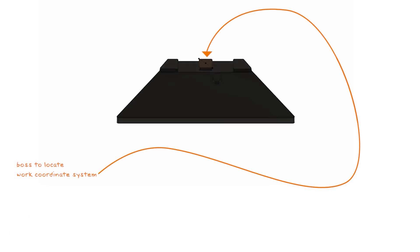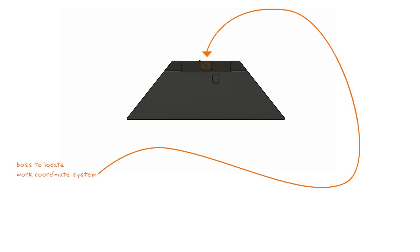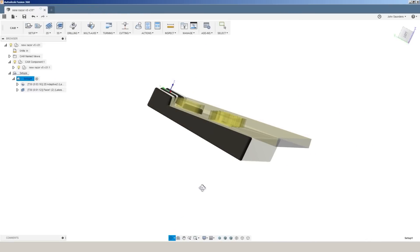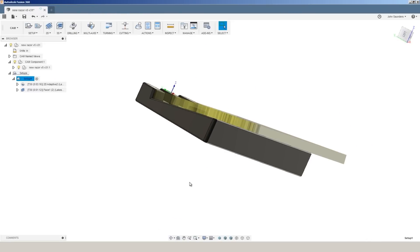In the video we walked through not only how we designed the fixture but how we included a datum that Jimmy could use to probe off of to find his work coordinate system when he put this fixture on his machine.